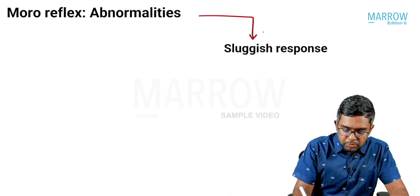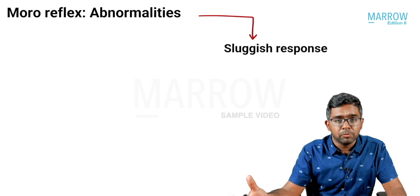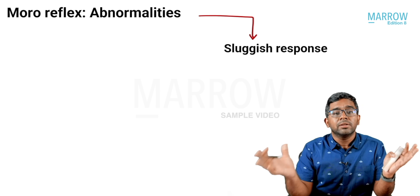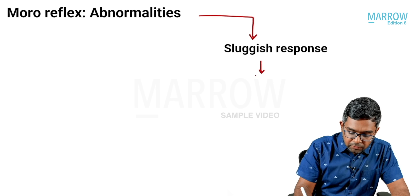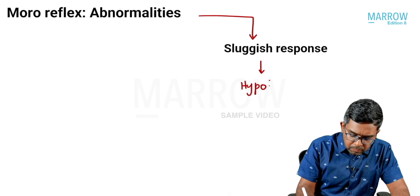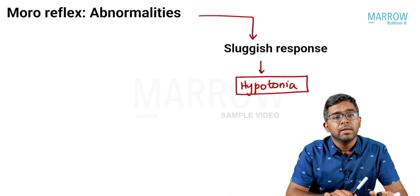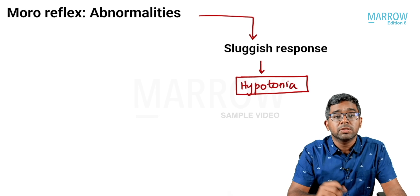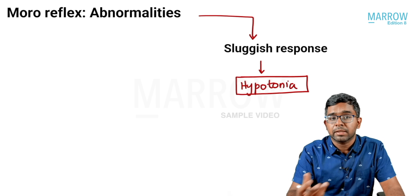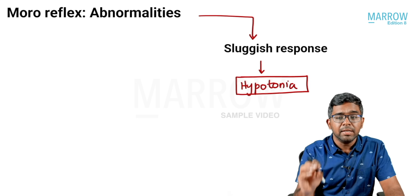Looking at important abnormalities of the Moro reflex: the first is a sluggish response, meaning reflex movements are elicited but less than normal. This is seen in conditions of hypotonia. Conditions causing hypotonia in a newborn include metabolic disorders, Down syndrome, and neurological problems like spinal muscular atrophy — all giving a sluggish Moro reflex response.